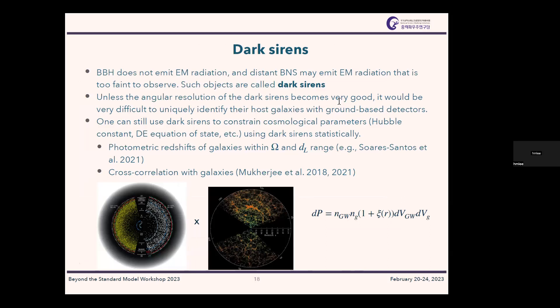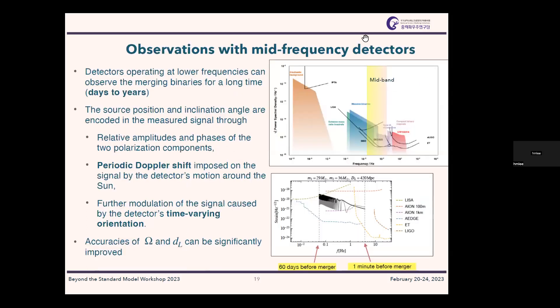If we use detectors sensitive at lower frequencies — between 0.1 and 1 Hz, called the mid-frequency band — the gravitational wave sources start emitting at very low frequencies and slowly move to higher frequencies. For example, if we can observe from 0.07 Hz, we can observe for 60 days before the merger. If we can observe from 5 Hz — possible in the Einstein Telescope — we'd have about one minute compared to seconds or less.